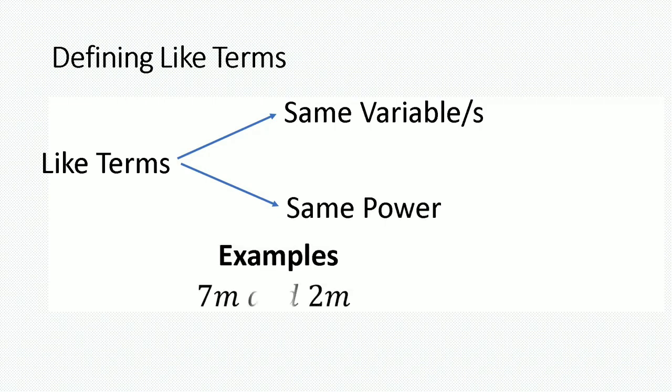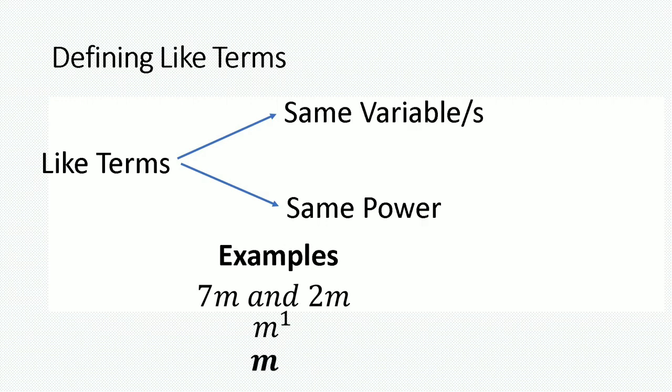Here are some examples. If I had 7m and 2m, these two terms are like terms simply because they share the same variable m and they are written to the same power — that is, m to the power of 1. But 1 is understood, so we simply write m.